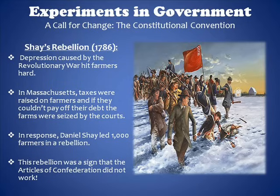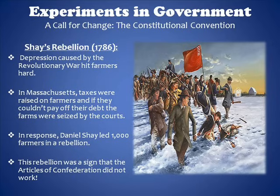The angry farmers felt they were being treated unfairly. An individual named Daniel Shays, who was a Massachusetts farmer who had fought at Bunker Hill and Saratoga, organized an uprising in 1786. More than 1,000 farmers took part in Shays' Rebellion. They attacked courthouses and prevented the state from seizing farms.